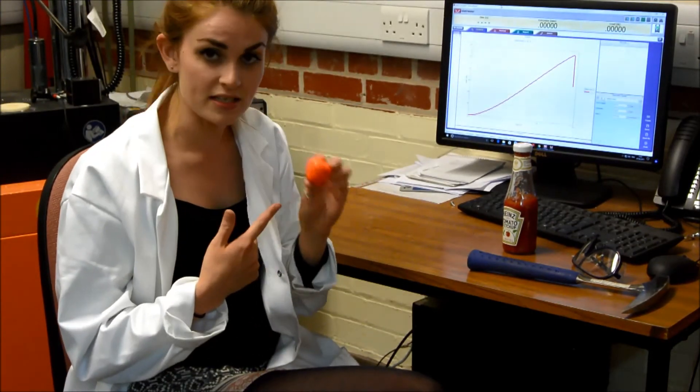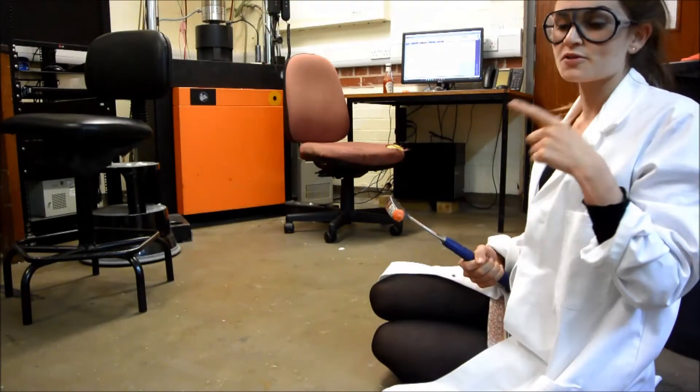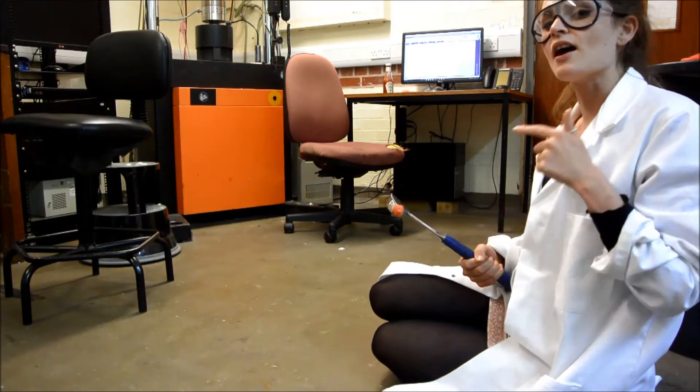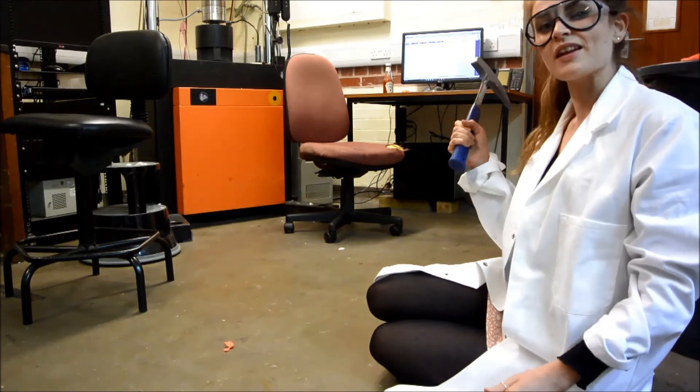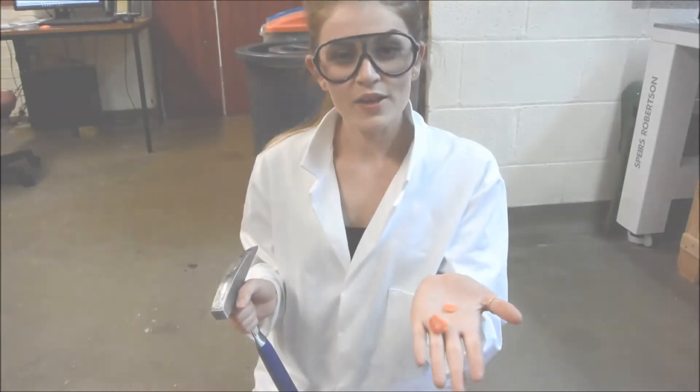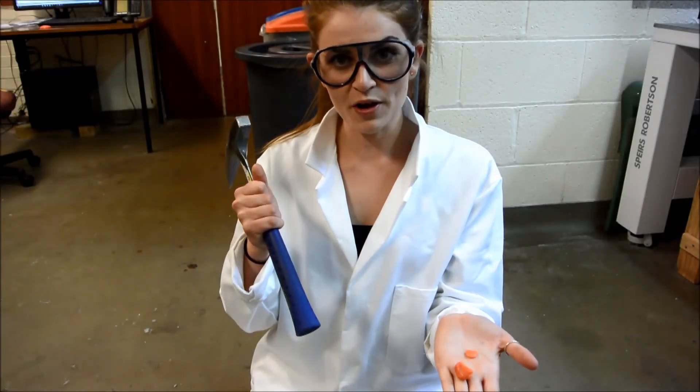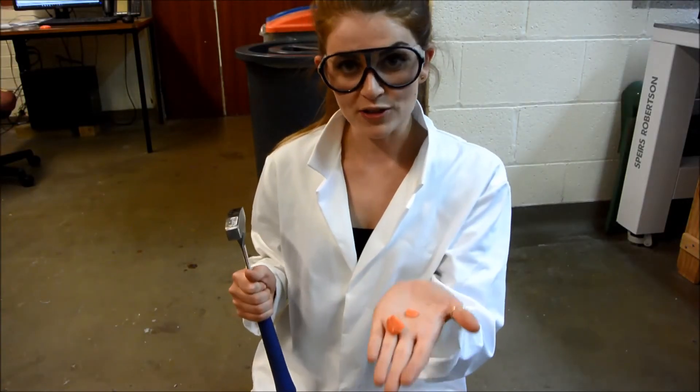I can then also deform it even faster, turning this silly putty into a brittle solid. So I have my safety goggles, my hammer and my silly putty, and now I'm going to break it on the floor. Now let's see that a little bit slower. So as you can see, hitting my silly putty with the hammer made it fracture brittlely.